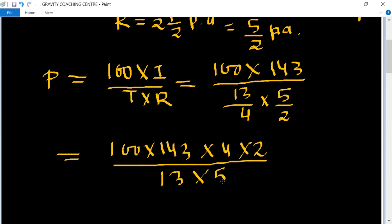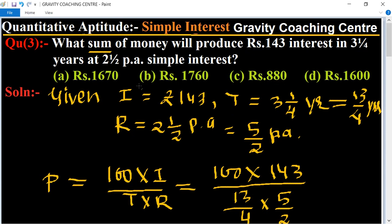So cancel by table of five - five, twenty. And table of thirteen - eleven, one. And now we multiply all the numbers so its result is one seven six zero, which is the required answer. So option B is the right answer.